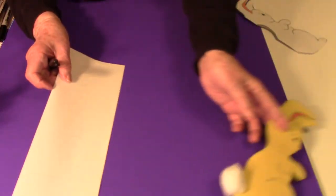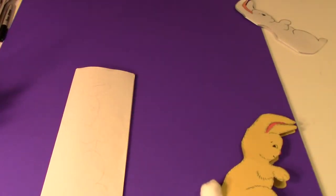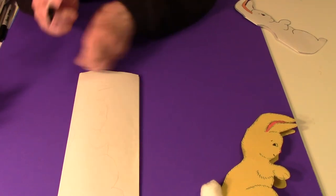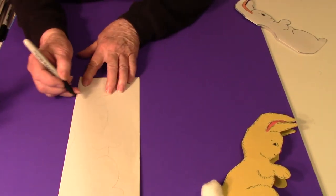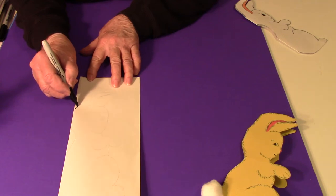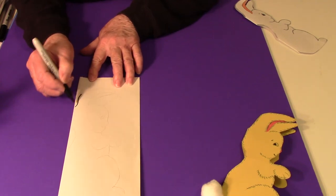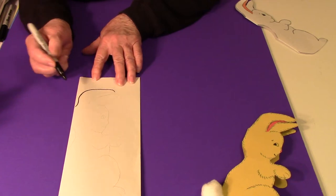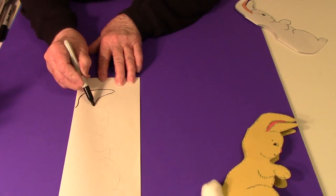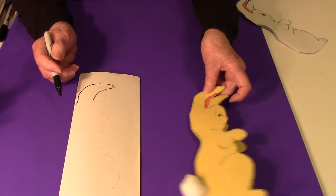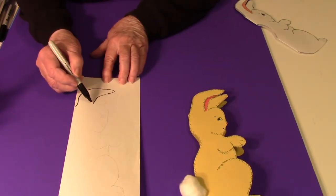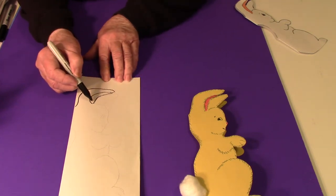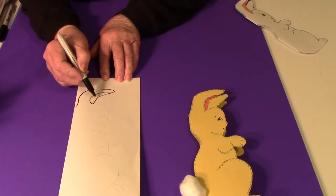I started out by drawing the rabbit on a fold, and I'm going to start with the ears. You may want to make your ears straight up; I made mine bend over a little bit. I made it curve like this and then curve back down. Since the little ear is on this side, you're going to see the inside of it, so I made a line here and that's where I put the pink for the inside.